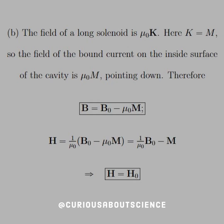So moving forward, the field of the long solenoid is mu-naught K, where K equals M. So the field of the bound current on the inside surface of the cavity is mu-naught M pointing down, which is what we saw in the diagram.